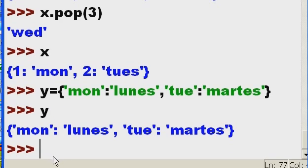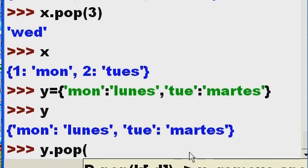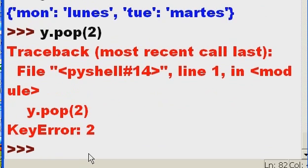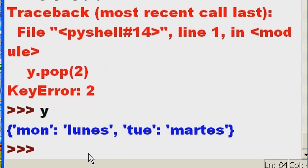So what do we do? I want to get rid of Tuesday. If I key in y.pop, I have to key in the key value. But the key value this time for Tuesday, martes, is 'tue', not the element number two. Watch what happens if I try and key in two. Error. So let's do it the right way now.